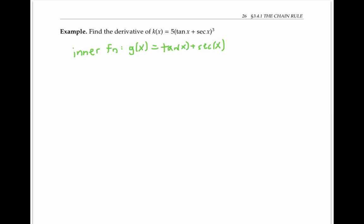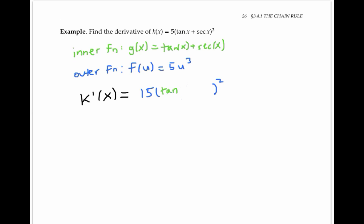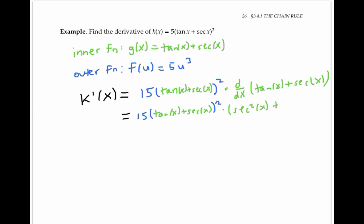For the next example, our inner function was tan x plus secant x, and our outer function f of u was five u cubed. So k prime of x is 15 times u squared, evaluated on the inner function tan x plus secant x. Then we still need to multiply that by the derivative of the inner function, tan x plus secant x. So we get 15 times (tan x plus secant x) squared, times the derivative of tan x, which is secant squared x, plus the derivative of secant x, which is secant x tan x.